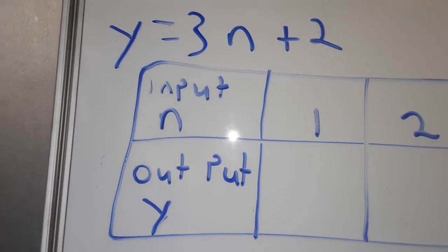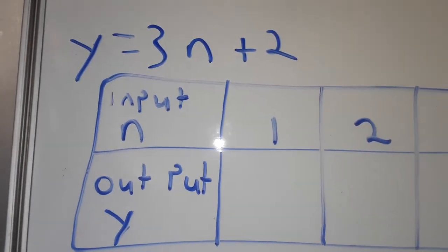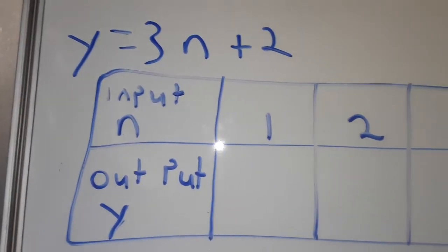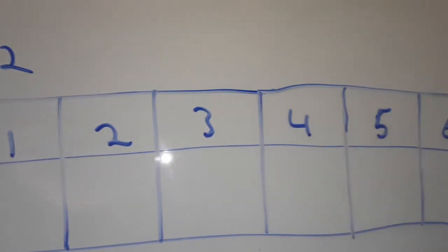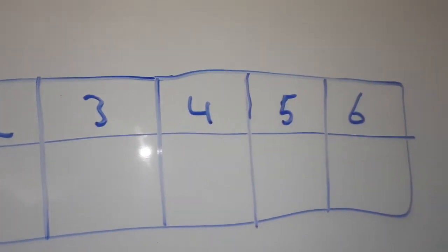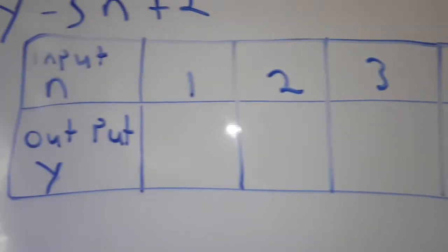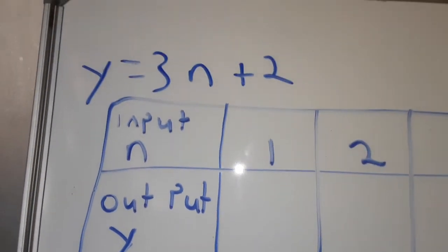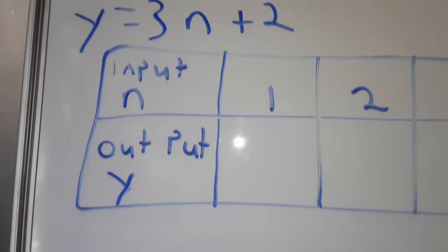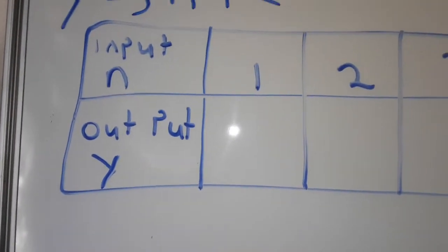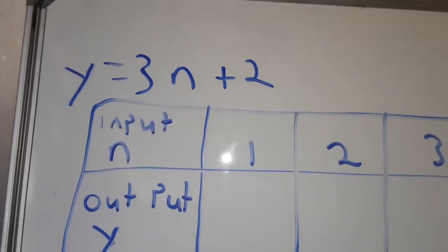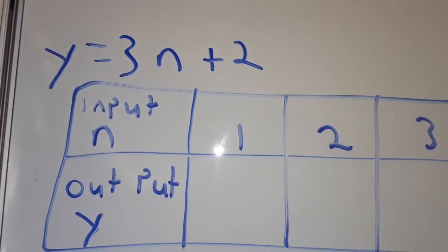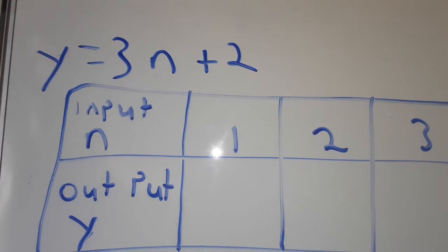We have this table. The input is what is n. We have 1, 2, 3, 4, 5, 6. Now we want the value of the output, which is the value of y. We have a formula that says y is equal to 3n plus 2.